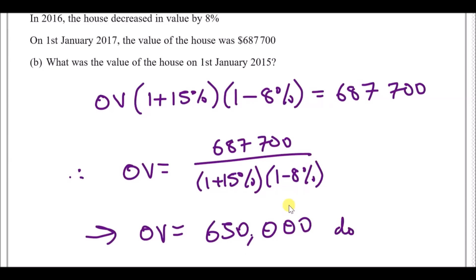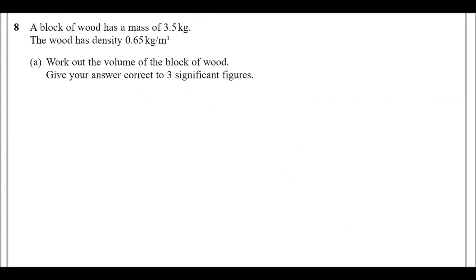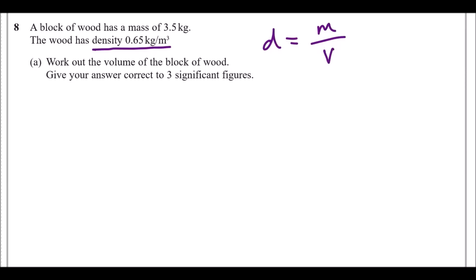Number eight: a block of wood has a mass of 3.5 kg and a density of 0.65 kg per metre cubed. If you've forgotten the density formula, look at the units — kg per metre cubed means density equals mass over volume, since metre cubed is a volume. That's your density formula.